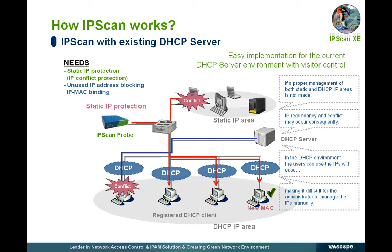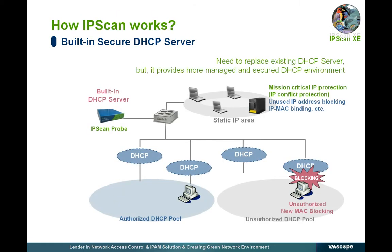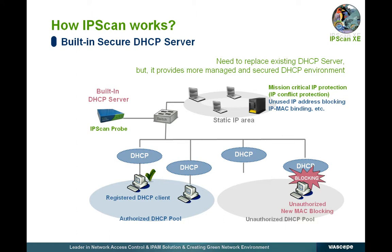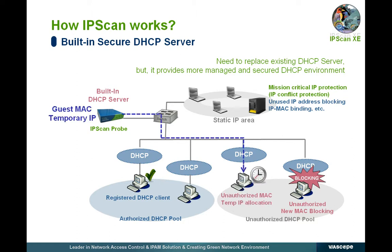Unlike this vulnerability, IP scan detects access by any unauthorized user right after they access the corporate network and transfers blocking packets, isolating the unauthorized user from the internal network. IP scan is also equipped with its own DHCP server and provides a perfect environment for DHCP-demanding companies. Major network devices needing static IPs can be protected from IP conflict, and the DHCP reservation function assigns reserved IPs to authorized users. IP scan also blocks access from new users such as guests and assigns a temporary IP range usable only for a specified time period, contributing greatly to network protection and management.